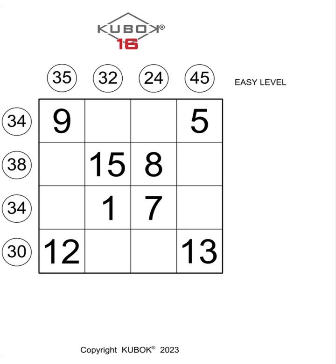We know that the numbers imprinted in the small circles outside the rows and columns represent the sum of the four numbers belonging to each row and each column.